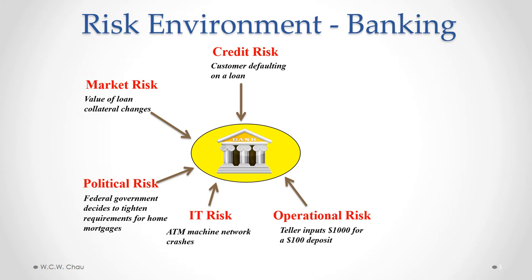Another type of risk is operational risk — these are risks arising from the physical operations of the bank. A simple example would be if you go up to a bank teller at a branch and make a deposit of a hundred dollars, but the teller by mistake inputs that deposit as a thousand dollar deposit. That's an operational risk.